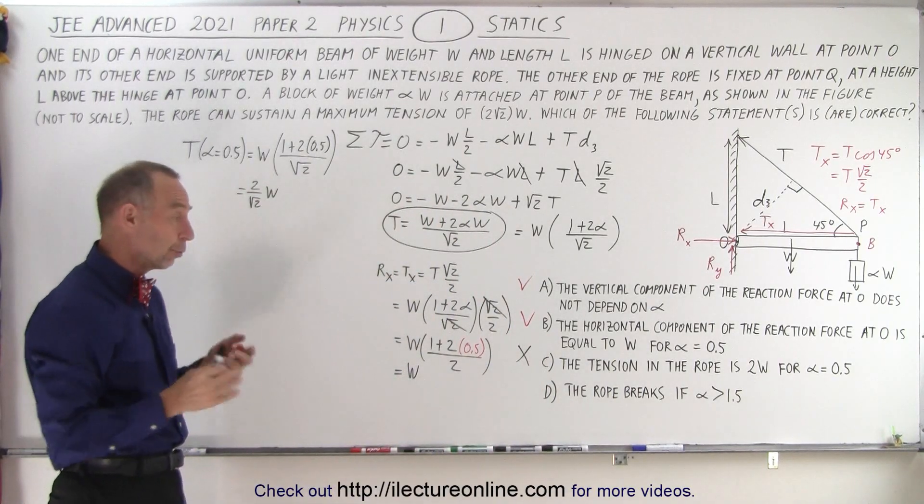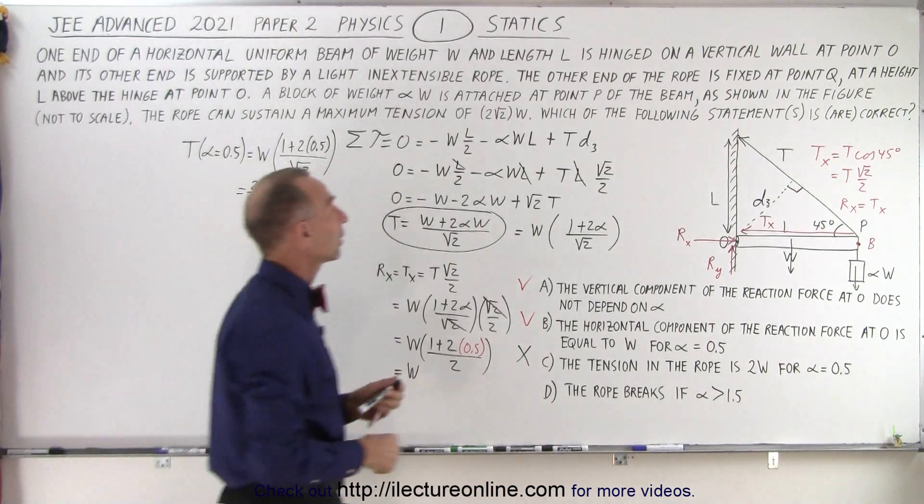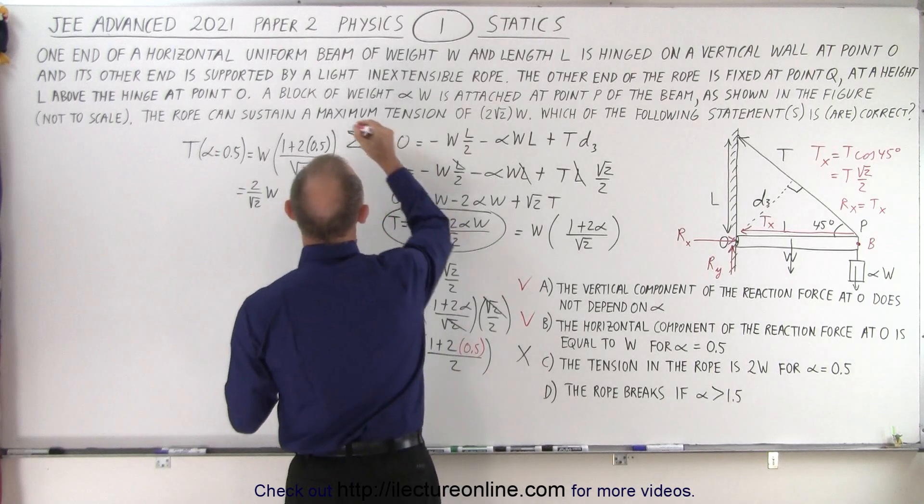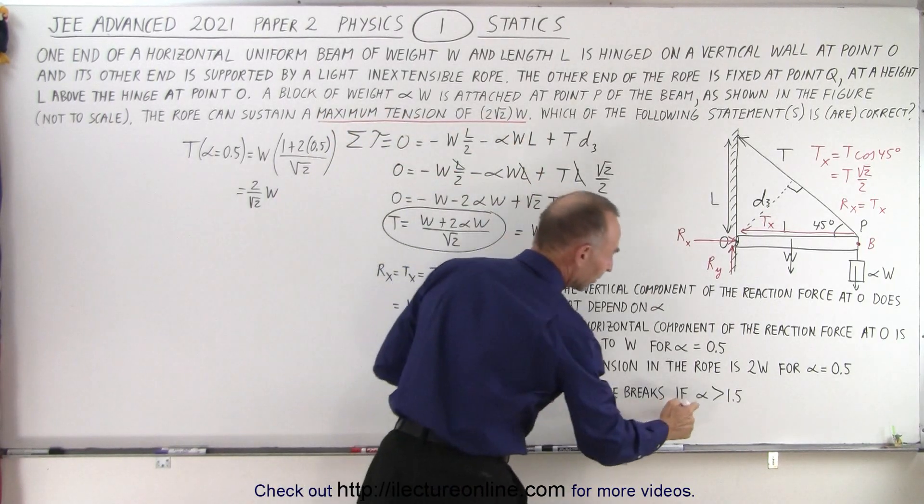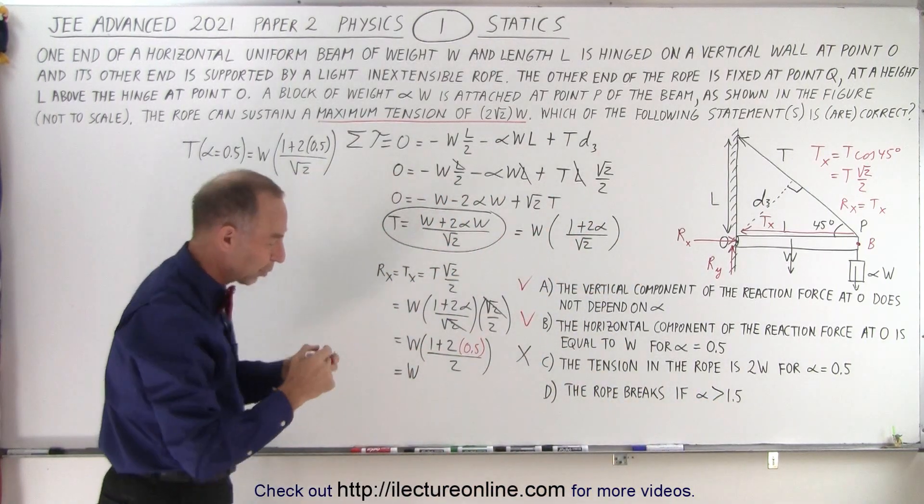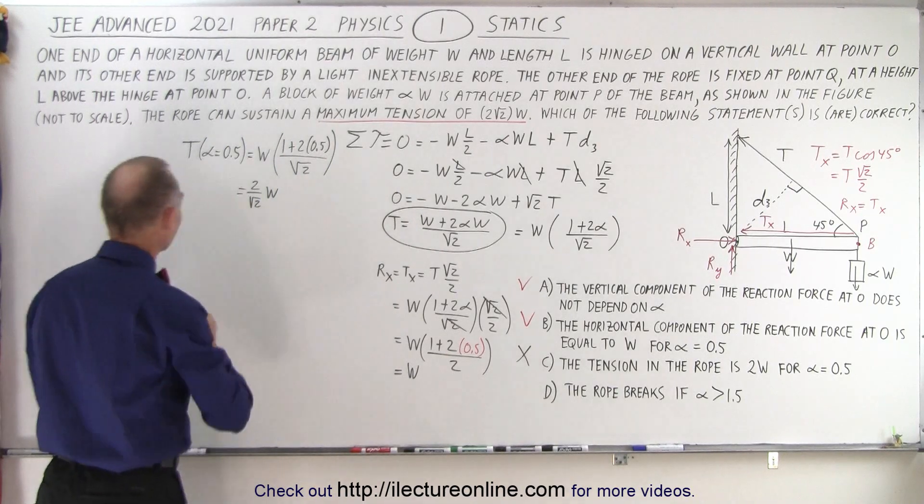And finally, they tell us the rope breaks if alpha is greater than 1.5. We know that there's a maximum tension right here. So now, let's replace alpha by 1.5 and see if that's the threshold at which the rope would break.